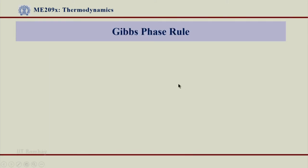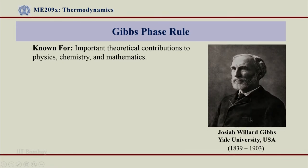Gibbs phase rule — this is a picture of scientist Gibbs from Yale University, USA. His life period was 1839 to 1903. He is known for his very important theoretical contributions to physics, chemistry, and mathematics. Gibbs phase rule is a very famous rule that is normally used to define properties for different phases together or independent phases.